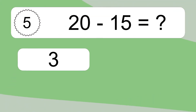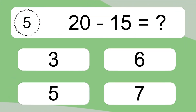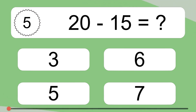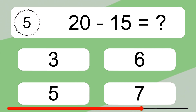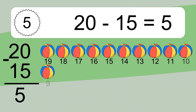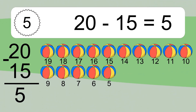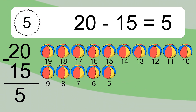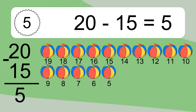20 minus 15 equals what? 20 minus 15 equals 5. Let's count it: 19, 18, 17, 16, 15, 14, 13, 12, 11, 10, 9, 8, 7, 6, 5.